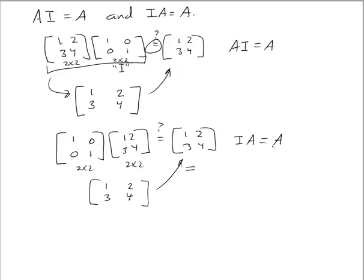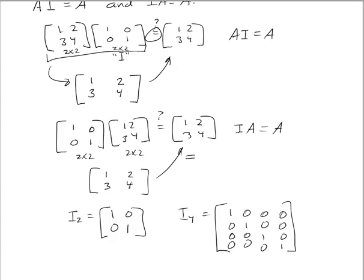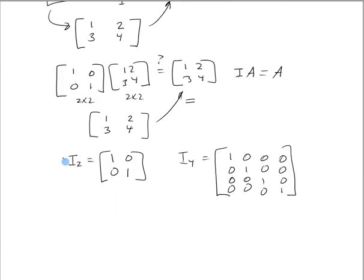This holds for any n-by-n square matrix. A matrix with ones down the main diagonal from upper left to lower right and zeros everywhere else is called the multiplicative identity matrix of order n. We write I₂ for the two-by-two identity, and I₄ would be a four-by-four identity with ones on the diagonal and zeros everywhere else.